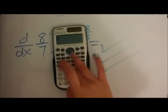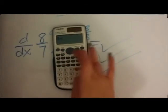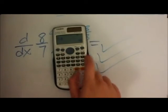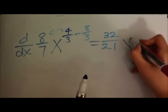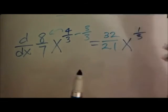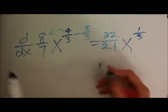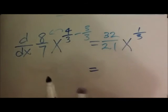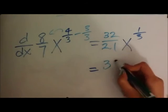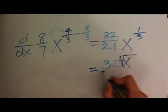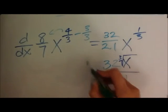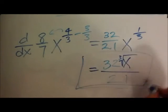So I'm just going to put in 8 over 7 times 4 over 3. And that's going to give us 32 over 21. So I'm going to write that down. 32 over 21 times x to the 1 over 3. And when we simplify this, we're going to get 32 cubed root x all over 21. And that's going to be your answer for this question.